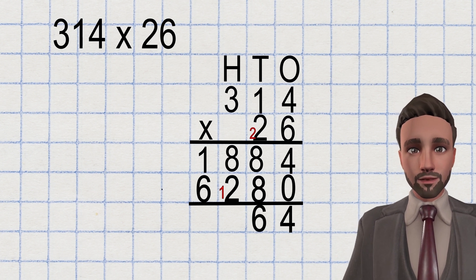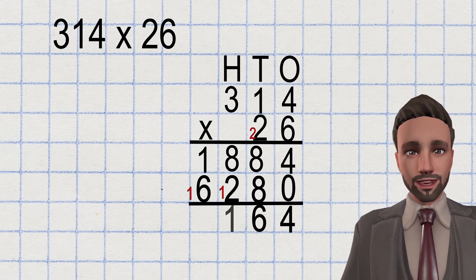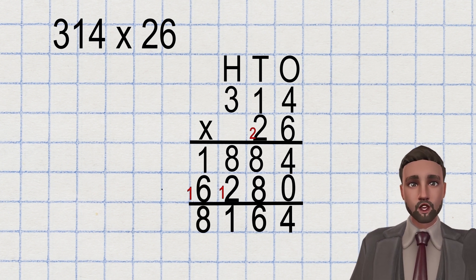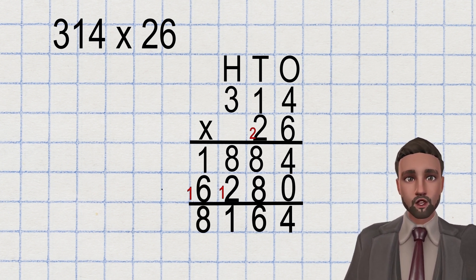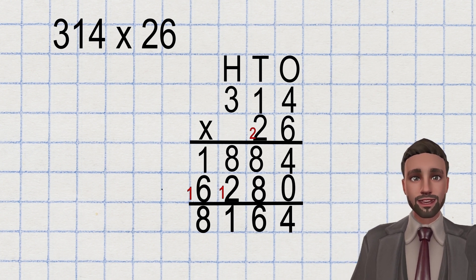8 add 2 add the 1, 11. Carry the 1 over again. Place the 1 back down. 1 add 6 add 1, 8. And that's it. You're complete. The product of 314 and 26 is 8,164.